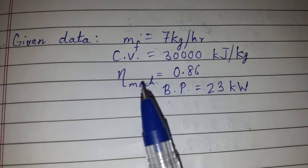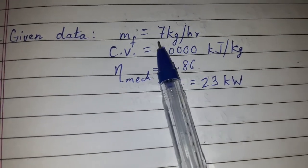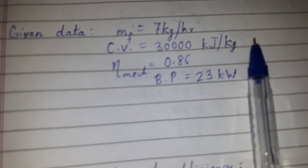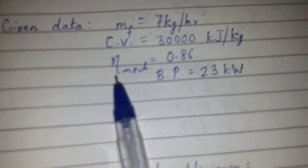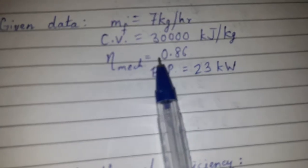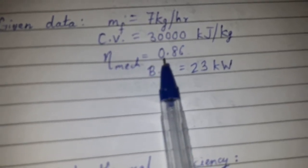Now the given data: MF is 7 kg/hour, CV is 30,000 kJ/kg, BP is 23 kW. Mechanical efficiency is 86%, which we'll write as 0.86 in the formula.